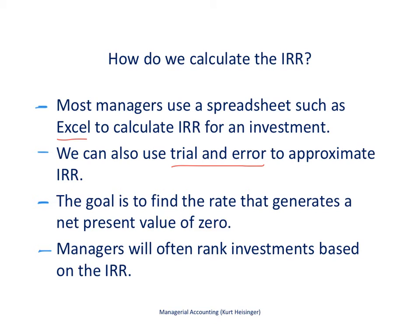The goal is to find the rate that generates a net present value of zero. Once we have the rate, we might do this for multiple projects — we weed out projects that have an internal rate of return lower than our required rate of return. Then once we see the acceptable projects, we might use the IRR to rank them. For example, if our required rate of return is 10%, and projects have IRRs of 14%, 16%, and 25%, we can use those rates to rank the investments.